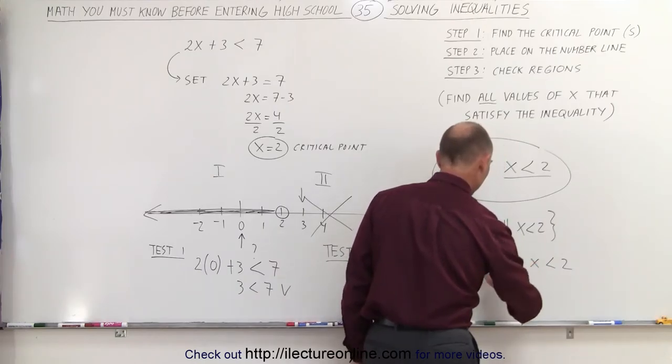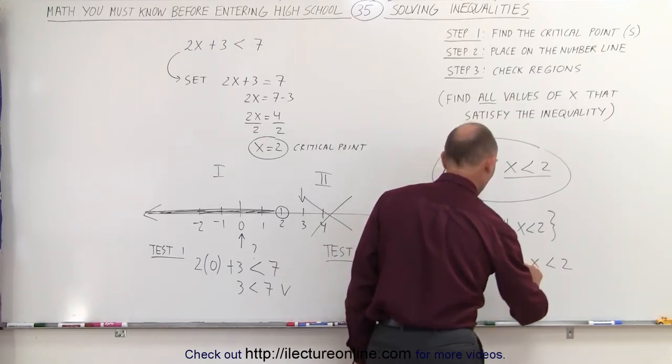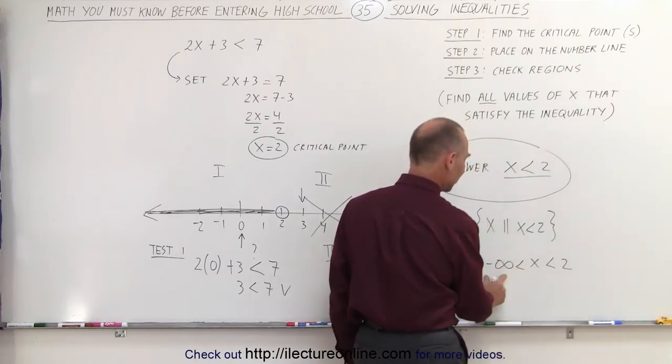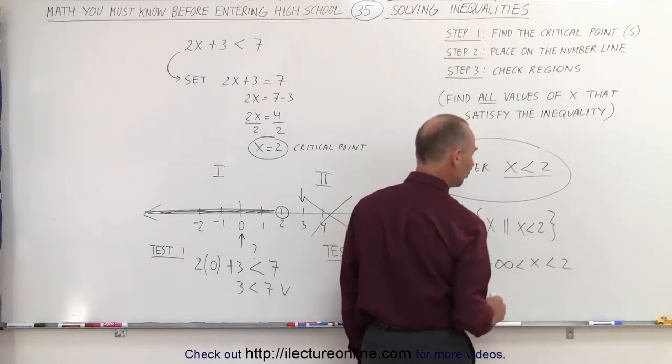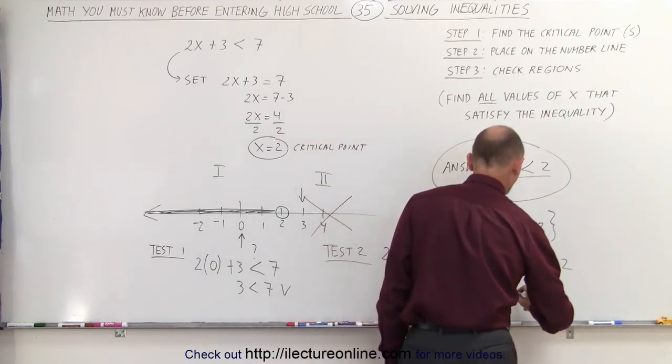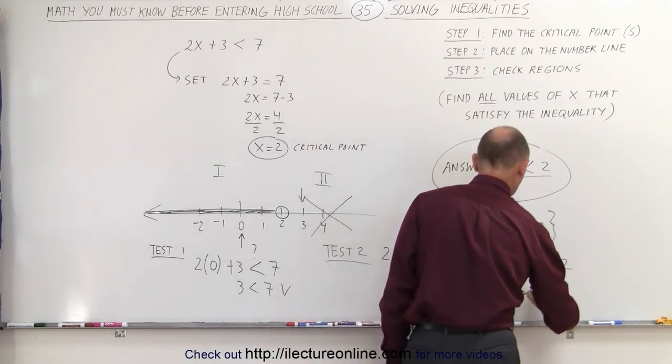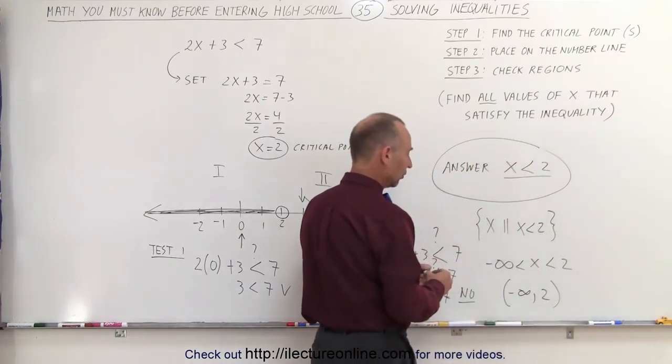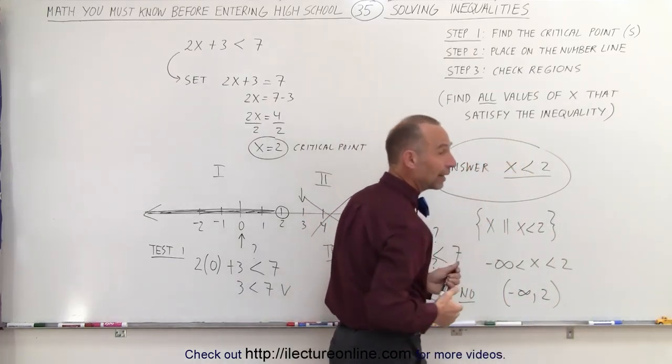Oops, I'm missing something here. So negative infinity is smaller than x smaller than 2. So x lies between negative infinity and the number 2, or sometimes we can do it in this notation, that negative infinity to the number 2 and not including the number 2. So these are various ways in which we can write the answer...